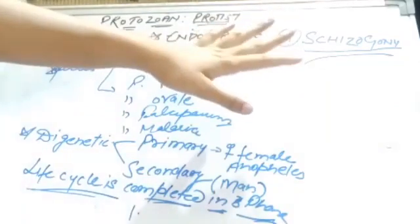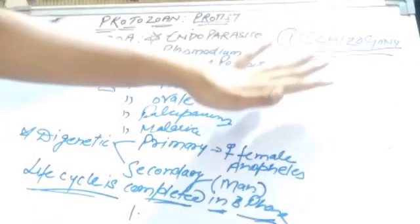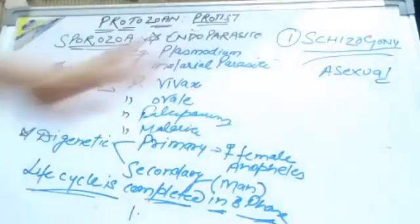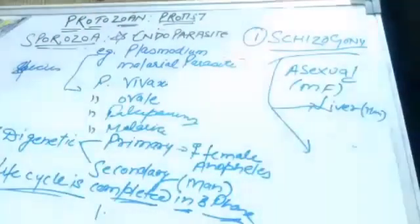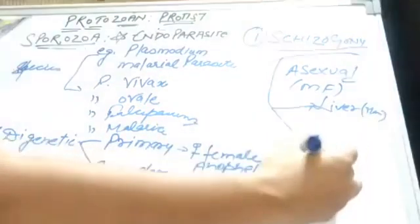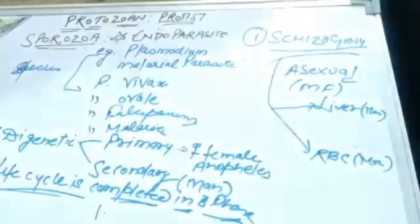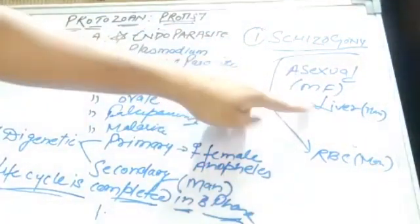The first phase is schizogony. Schizogony occurs in the human host. In humans, it takes place in the liver and in RBCs. The liver stage is called hepatic schizogony.